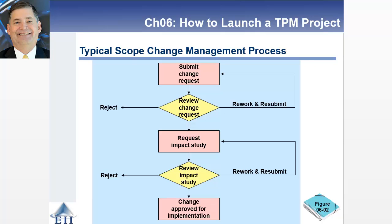The typical scope change management process is: a change, new feature, or fix is requested for a particular project, submitted, and reviewed. It could be rejected, reworked by sending it back to the submitter for additional details, or approved for further study. You can then request an impact study, look at the advantages and disadvantages of the change, and again either reject it, submit it for further definition, or approve it and add it to the project plan.